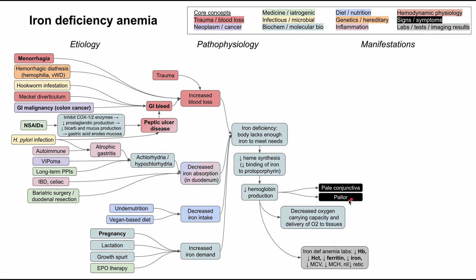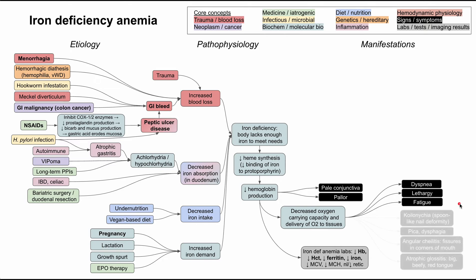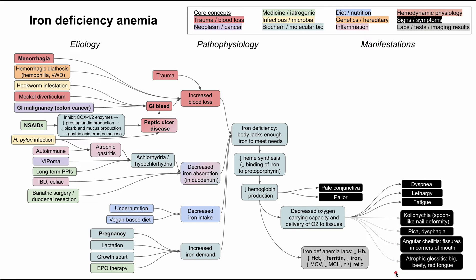Decreased hemoglobin production is directly seen as pallor and pale conjunctiva. From decreased oxygen carrying capacity, patients can have shortness of breath, dyspnea, lethargy, and fatigue. Other symptoms specific to iron deficiency anemia — whose exact pathogenesis is uncertain but suspected to relate to decreased oxygen carrying capacity — include koilonychia (spoon-like nail deformity), brittle nails, pica (eating non-edible things like ice or paint chips), dysphagia, angular cheilitis (fissures at the corners of the mouth), and atrophic glossitis (big beefy red tongue).